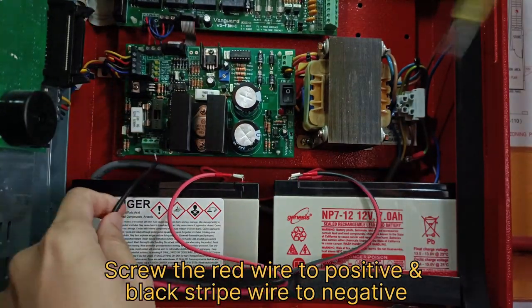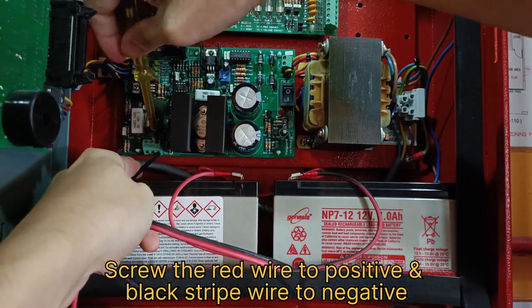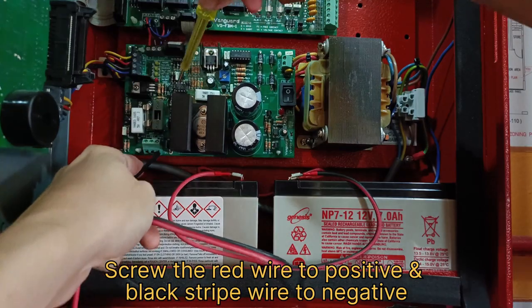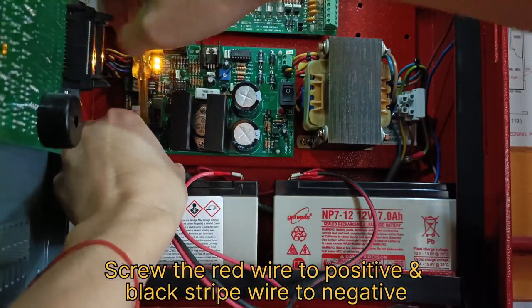From here you have to screw the red wire to the positive and the black wire to the negative terminal. There could be a small spark once you complete the whole circuit as the battery will supply power into the board.